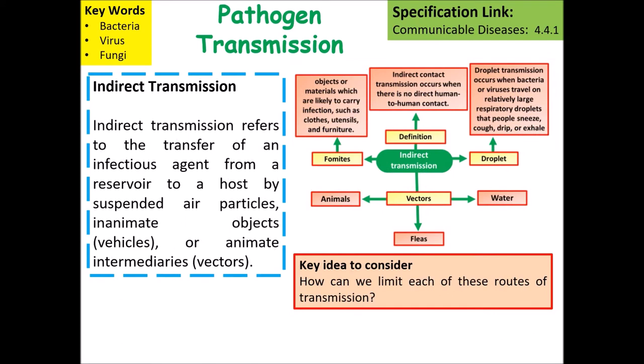Indirect transmission refers to the transfer of the infectious agent from the reservoir to a host by suspended air particles, inanimate objects or animal intermediates. Consider how we could limit each of these transmission routes.